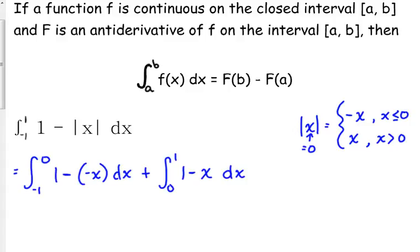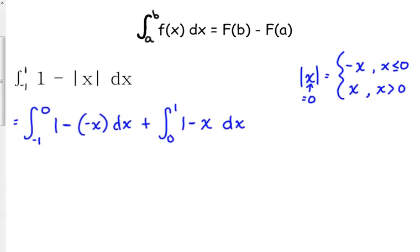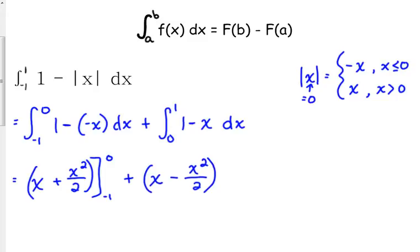We just have two definite integrals here to evaluate. The antiderivative of one is x. Subtracting that negative x is the same as adding x. So that's plus x squared over two. We are going to evaluate this piece from negative one to zero. Plus, the antiderivative of one is x. The antiderivative of negative x would be minus x squared over two. And that one is being evaluated from zero to one.